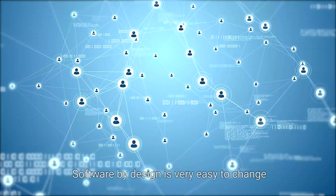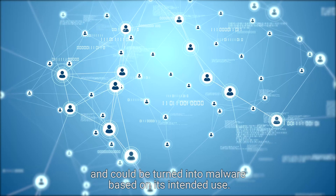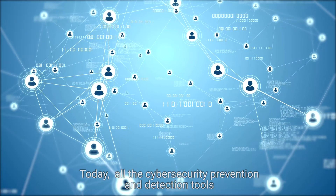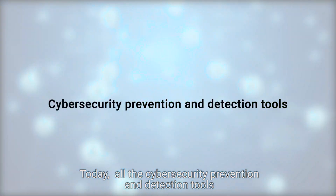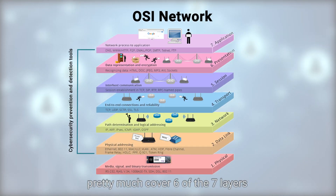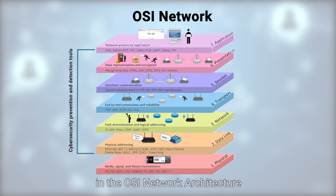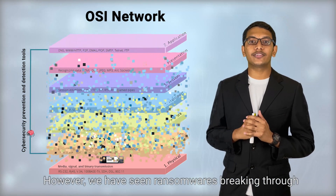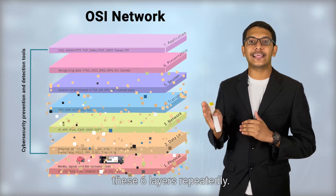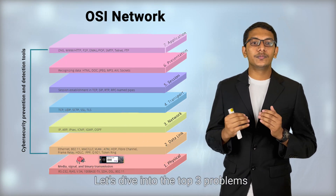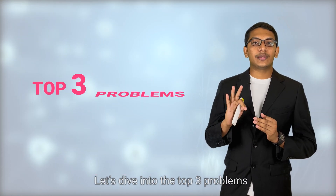Software by design is easy to change and could be turned into malware based on its intended use. Today, all the cyber security prevention and detection tools pretty much cover six of the seven layers in the OSI network architecture. However, we have seen ransomware breaking through these six layers repeatedly. Why is that so?